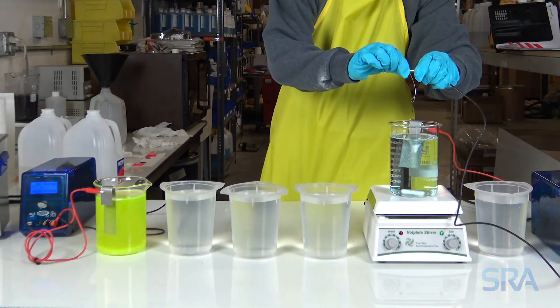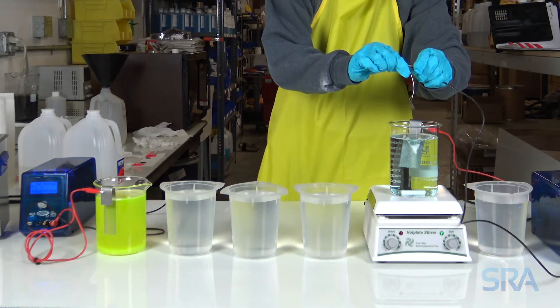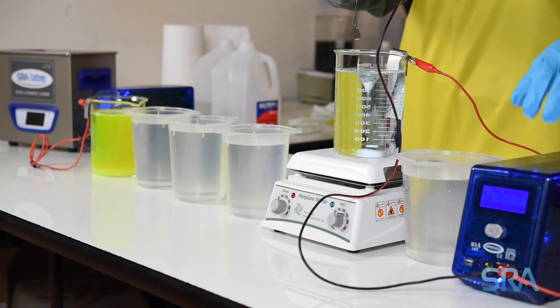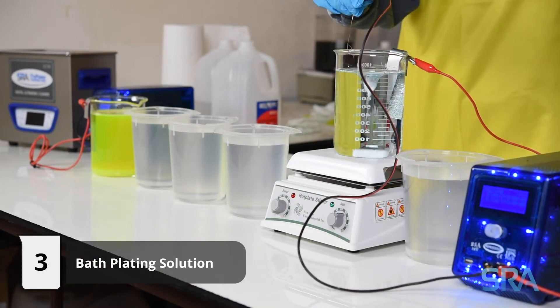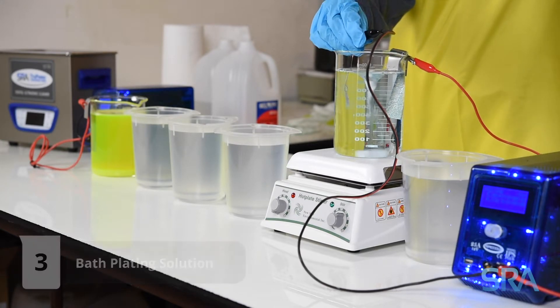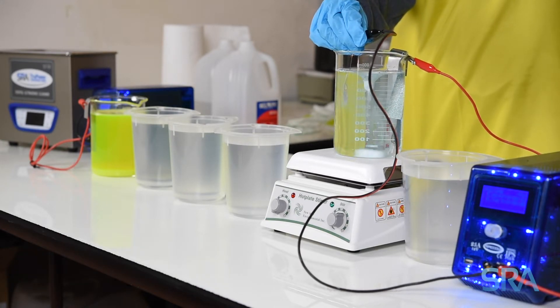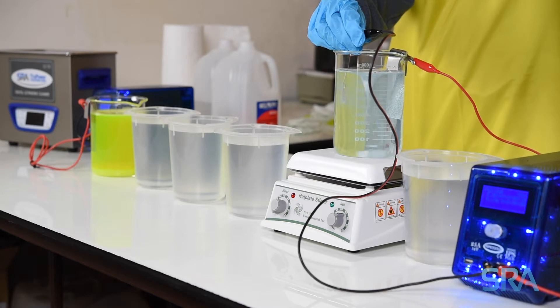Finally, connect the negative lead from the plating rectifier to your item. Turn on the unit and begin plating. We're going to plate for about 40 seconds at 110 degrees Fahrenheit with 5 volts applied to the stainless steel anode.